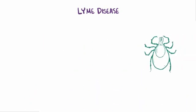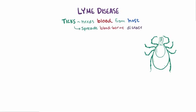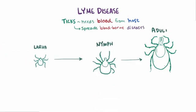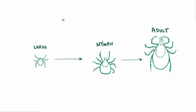Ticks need blood to survive — they need a blood meal from a host, just like mosquitoes, leeches, and other not so pleasant creatures. Being literal bloodsuckers makes them obvious candidates for spreading bloodborne diseases. Ticks also need to go through life stages: larva, nymph, and adult — not too different from children, adolescents, and adults.